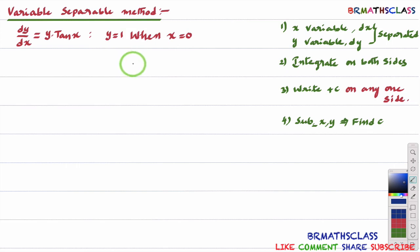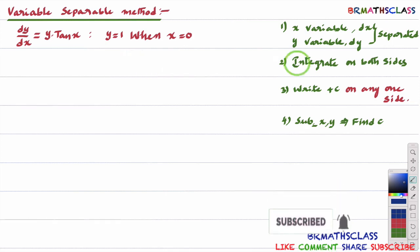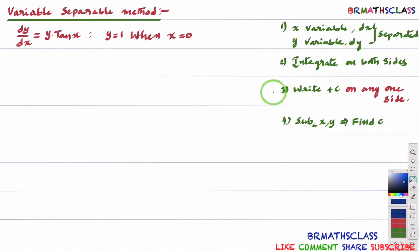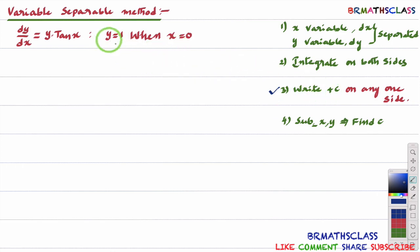To find the particular solution of the given differential equation, first we will find the general solution as usual, like earlier problems. First, we will separate x variable dx and y variable dy, and then we'll integrate. Then we'll get the general solution in step 3. Once you have the general solution, substitute the given x value and y value to find the value of c. Then substitute c back into the general solution. You'll get more clarity if you watch this video till the end.